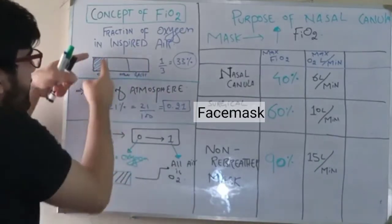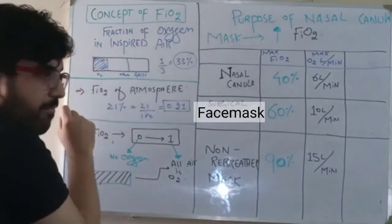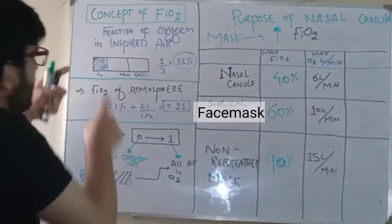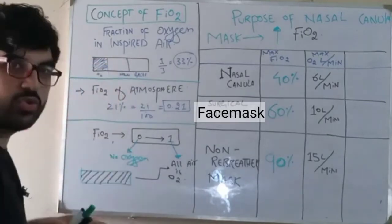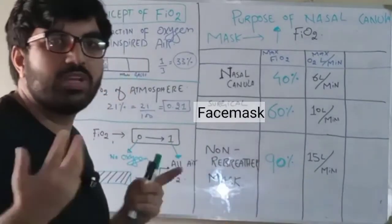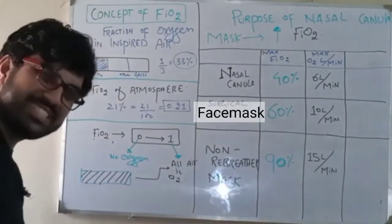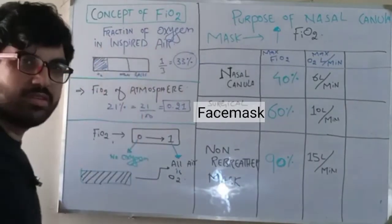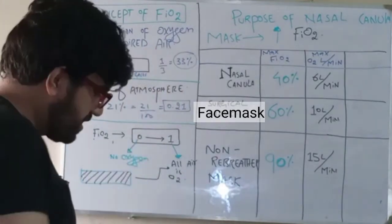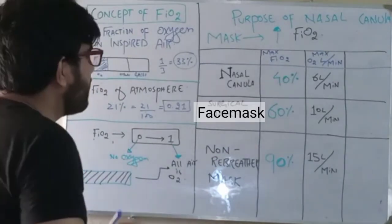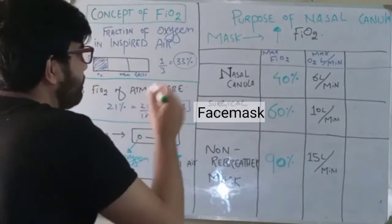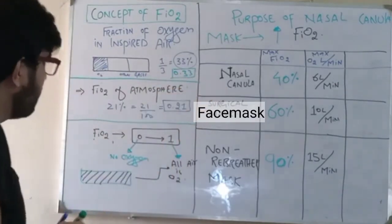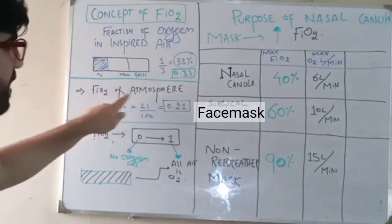If this is the total amount of air and this is the oxygen present in the air, this is actually FiO2. If it occupies one-third of the total amount of air, then what is its FiO2? It is one by three, 33 percent. 33 percent can be expressed in terms of decimal as 0.33.